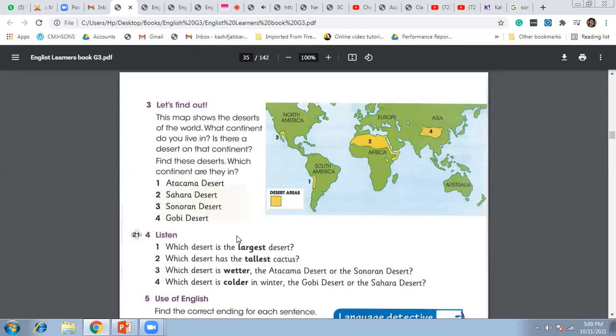The Gobi Desert is in Asia. It is called a cold desert because in the winter it is very cold and very windy. But in the summer, the Gobi Desert can get very hot. There are a few cold deserts in the world.